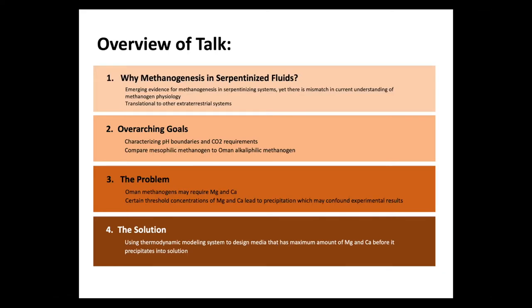To begin, I want to give a little overview of the talk. First, what exactly is methanogenesis in serpentinized fluids? These are terms that might not be familiar, so I'll explain them. Then I'll talk about the overarching goals of our research, where we're characterizing pH boundaries and CO2 requirements for these methanogens. We'll compare these methanogens to previously characterized ones, then go over the problem where methanogens may require magnesium and calcium, but those ions lead to precipitation, causing issues with data collection. Finally, the solution involves using thermodynamic modeling to design a media that avoids precipitation via magnesium and calcium.